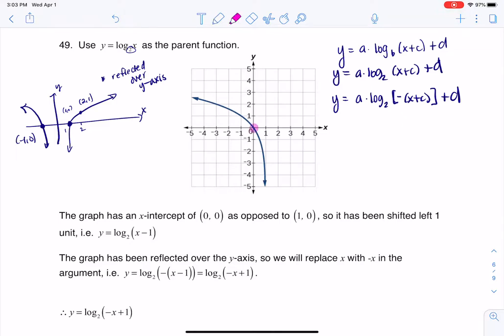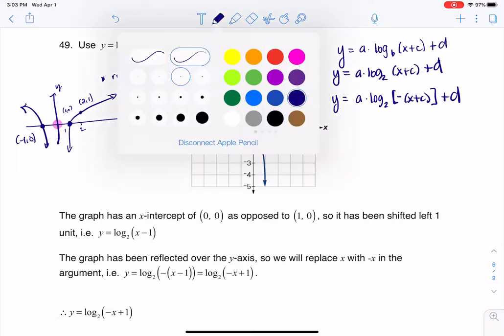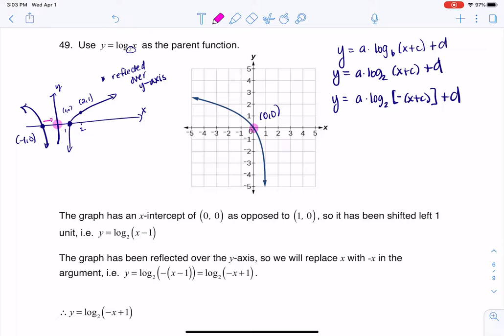But if you look at our graph, our graph has an X intercept at 0, 0. So on our graph, our X intercept is here, meaning that our X intercept has been shifted one unit right. So I have a horizontal shift of one unit right, which is why I'm going to be plugging in an X minus 1 there.